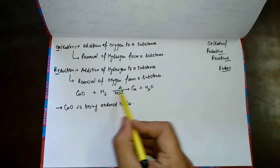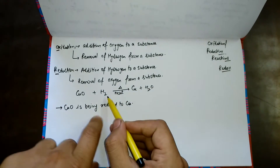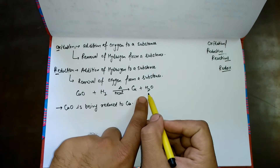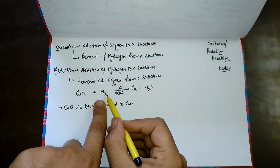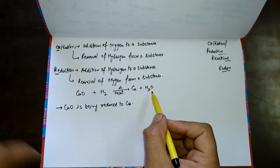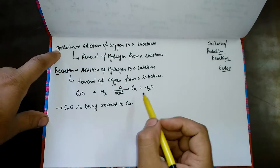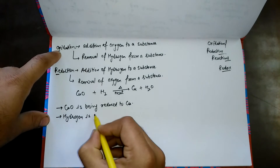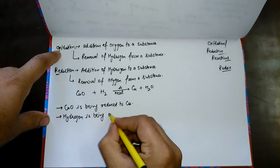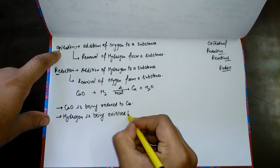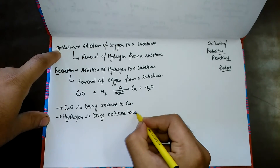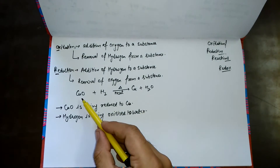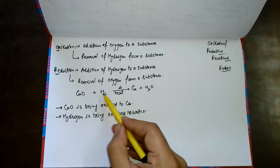Now, oxygen is added to the hydrogen. On the reactant side hydrogen is not bonded with oxygen, but on the product side, oxygen is along with the hydrogen to form H₂O. By definition, when there is an addition of oxygen to a substance, we call that oxidation. So hydrogen is being oxidized to water.